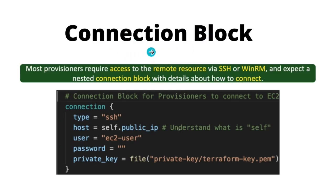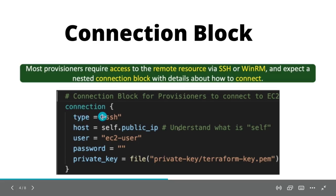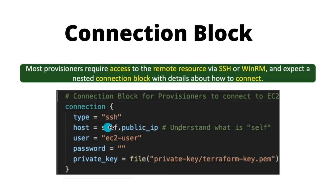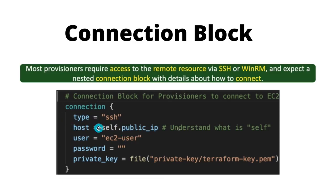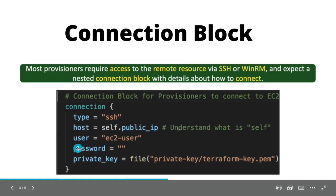Whenever you are using the file Provisioner or connecting to a remote resource, you have to provide a connection block — using SSH if it is a Linux machine, or WinRM if it is a Windows machine. The connection block looks like this: you pass in the type (SSH), the host using self.public_ip, and you pass in the user and the private key.